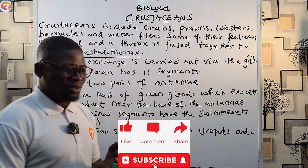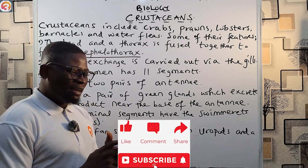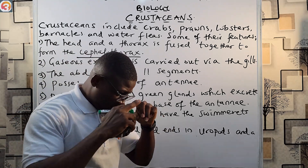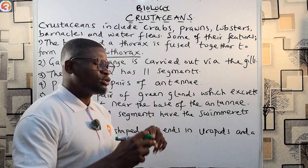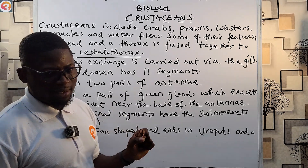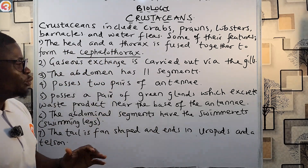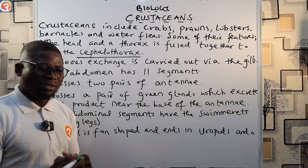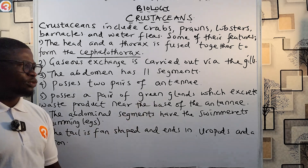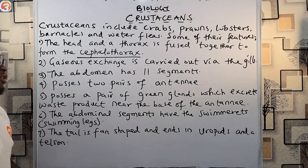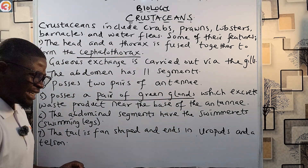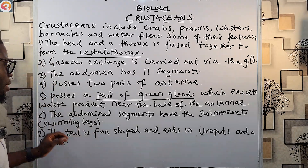The abdomen of the crustacean has 11 segments. They possess two pairs of antennae. They also possess a pair of green glands, which excrete waste products near the base of the antennae. So they use this pair of green glands to excrete waste products, and those green glands are located near the base of their antennae.